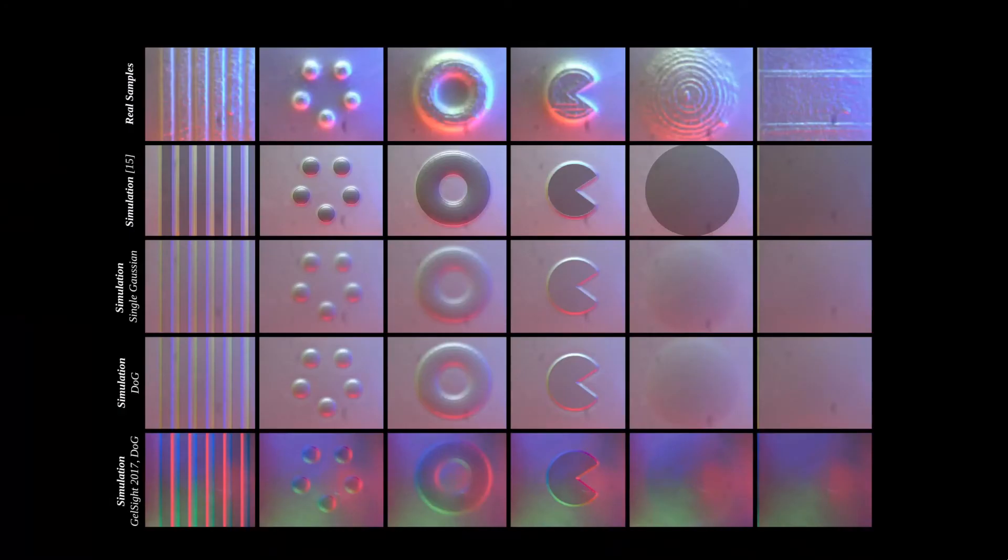Here you can see samples of the real and simulated images. On the top row are the real samples. Then the simulation method as proposed in our previous paper, submitted to the 2019 ICRA VETAC workshop. Our revised method proposed in this work using a single Gaussian and difference of Gaussians. And finally the simulated method, parameterized for the 2017 gel site sensor.